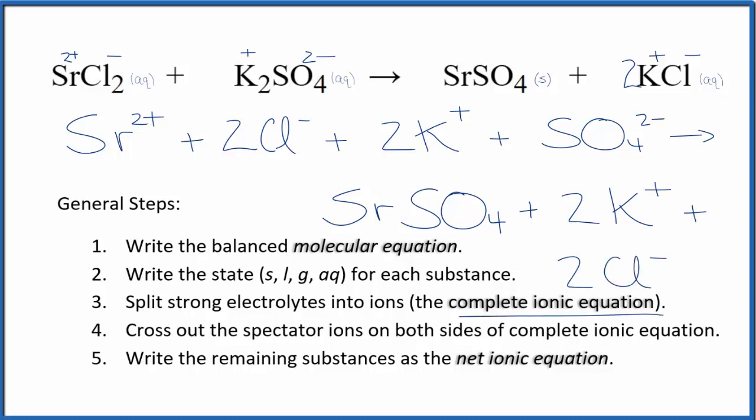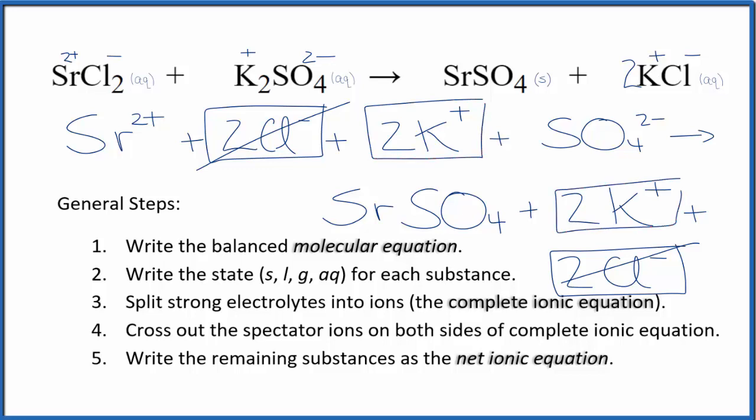So now that we have the complete ionic equation, we can cross out spectator ions. They're on both sides. So I can see in the reactants here, I have 2 chloride ions right here. And in the products, I have those 2 chloride ions. I'm going to cross those out. Those are spectator ions. 2 potassium ions in the reactants, and then again in the products. Spectator ions, we cross those out. And what's left is the net ionic equation for SrCl2 plus K2SO4.